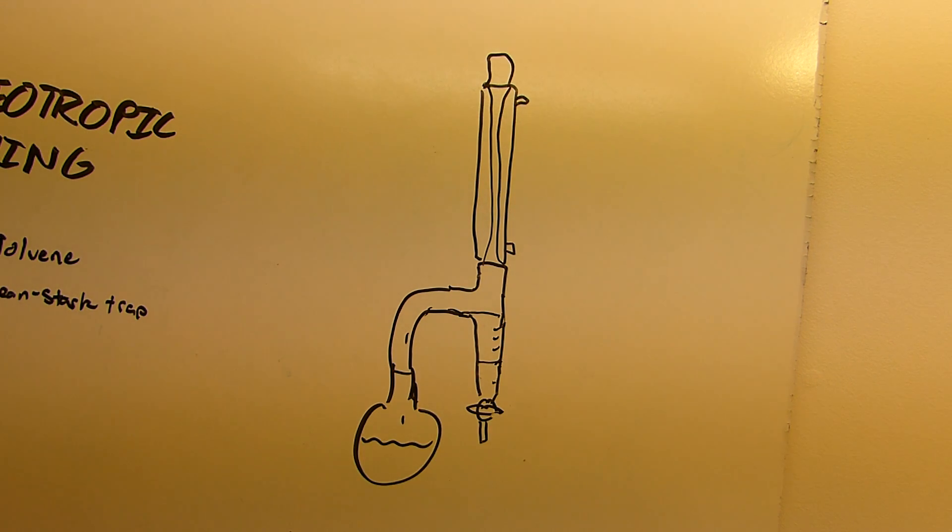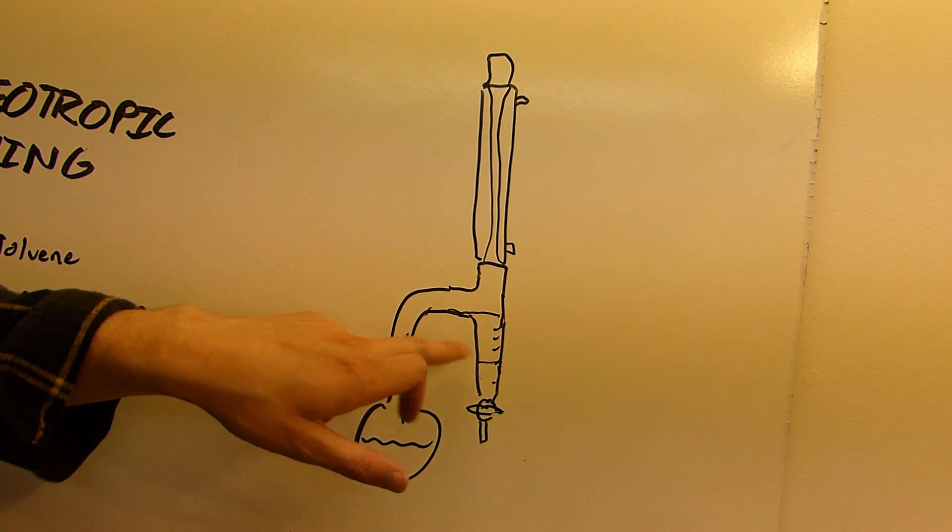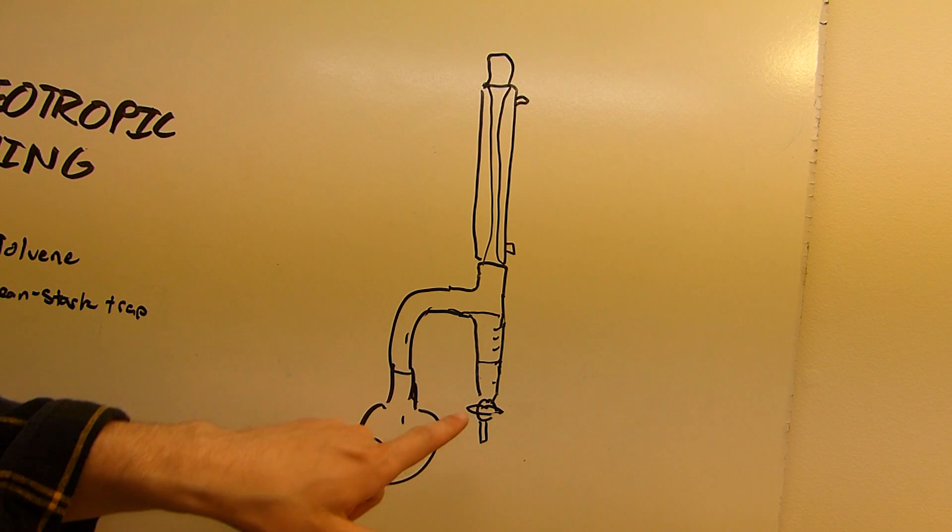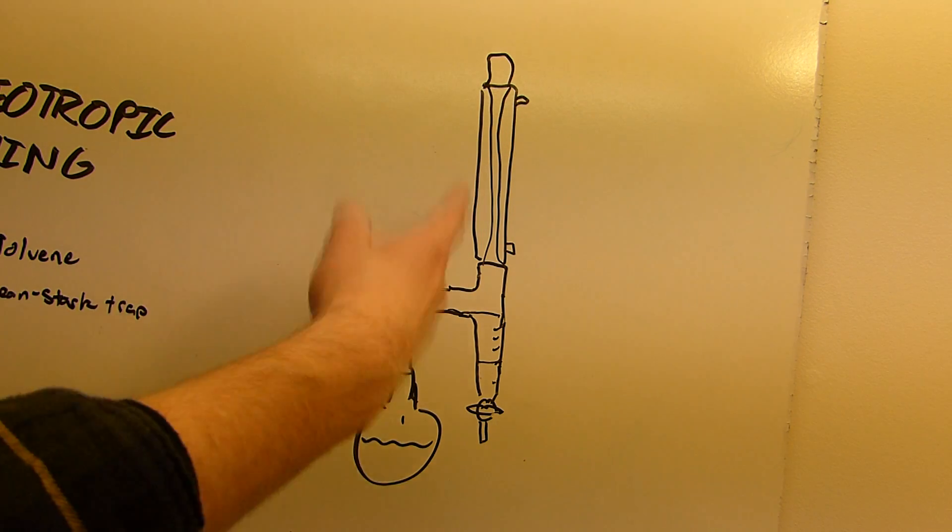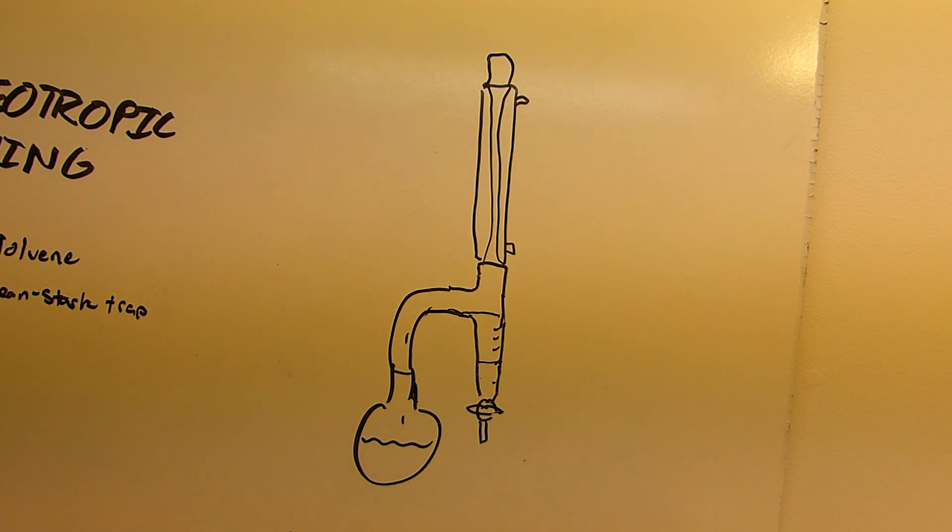Anyway, so you end up with a layer of water down here. So of course, the toluene floats on top of the water, it's less dense, and you can use the stopcock to periodically drain the water as you generate it. So you just run this apparatus, and you end up collecting all the water in here, and whatever is left down there is bone dry.